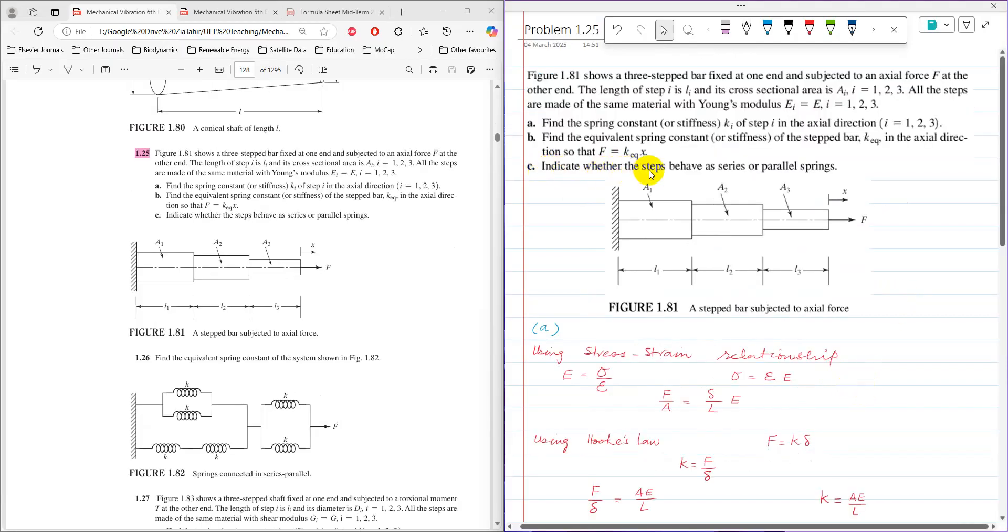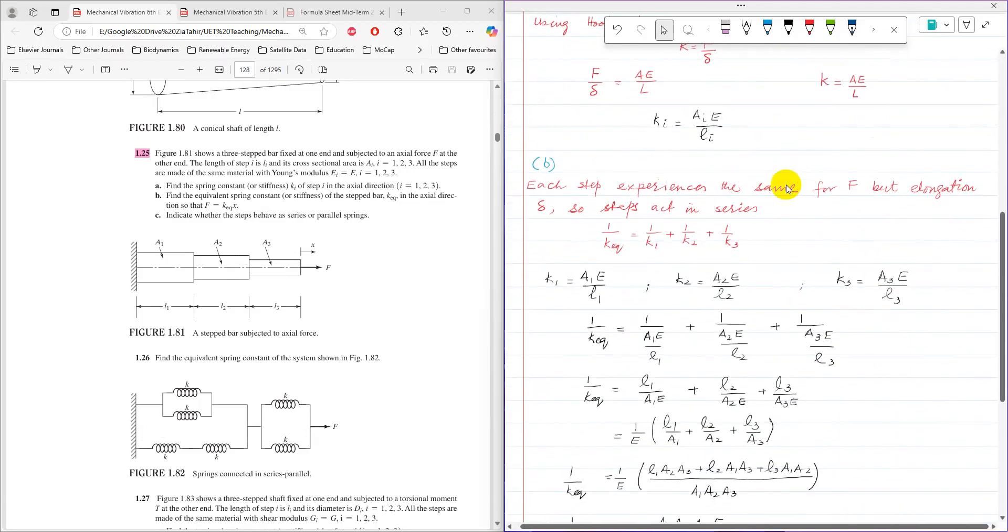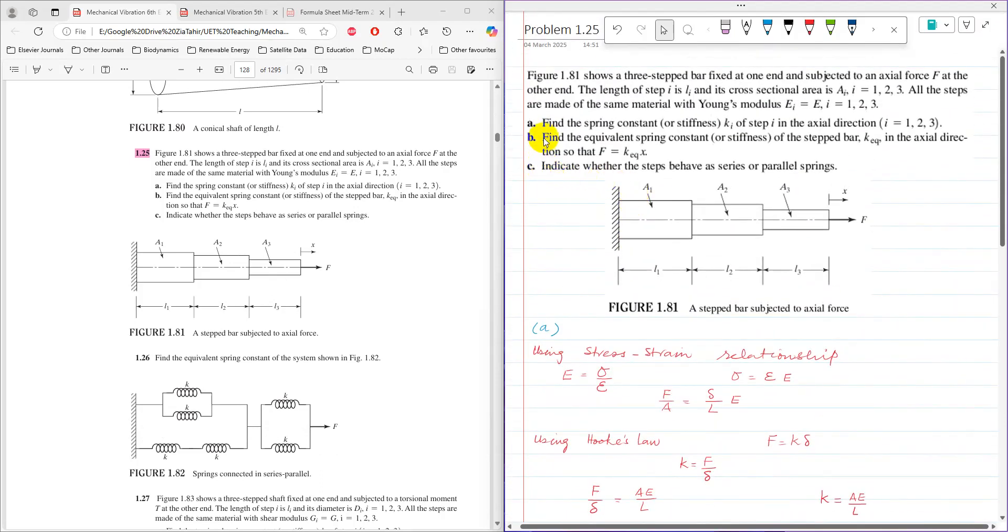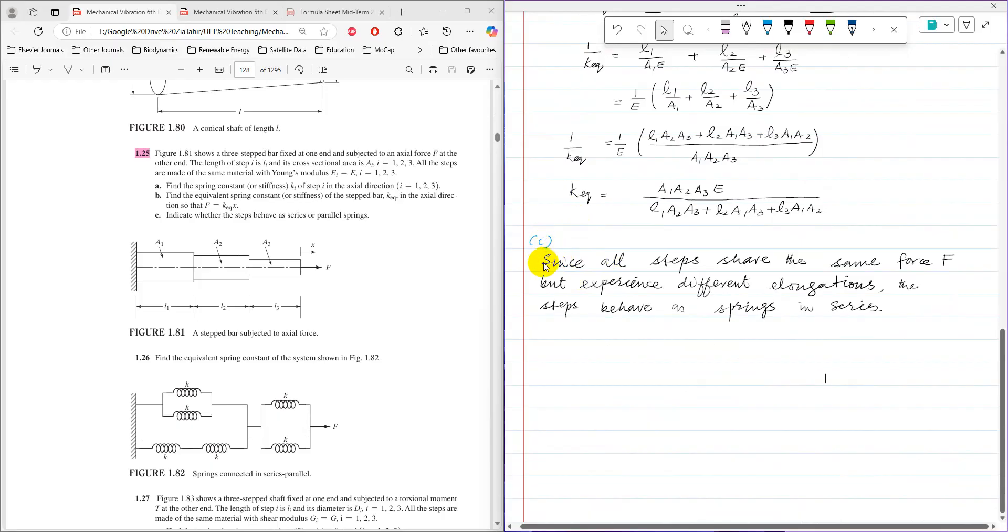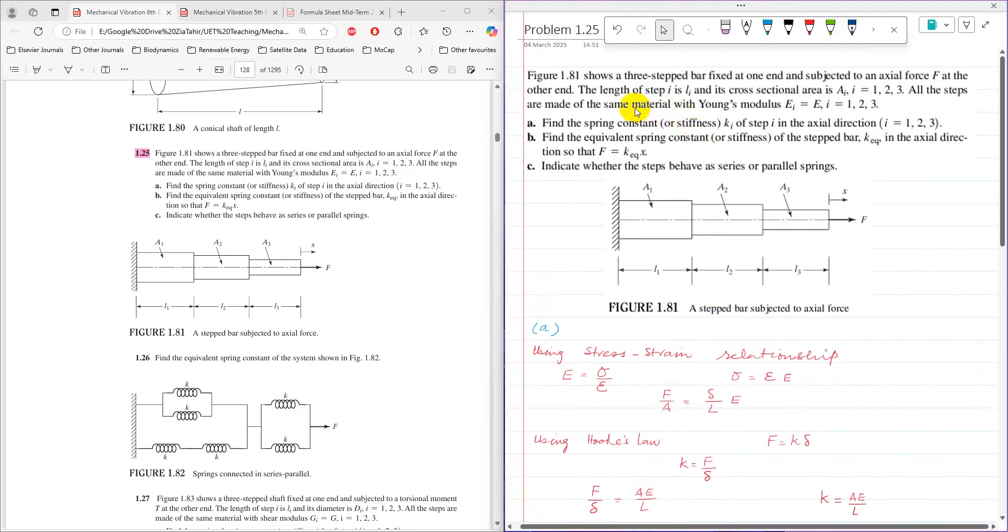Now for part C, indicate whether the steps behave as series or parallel. The answer I have already given here, because without this assumption, part B is not possible to solve. So anyway, part C is: since all steps share the same force F but experience different elongation, the steps behave as springs in series. So that is a fact. If you don't know whether some components are in parallel or series, then you will use the same concept. So that is the solution of this problem. Thank you very much for watching.